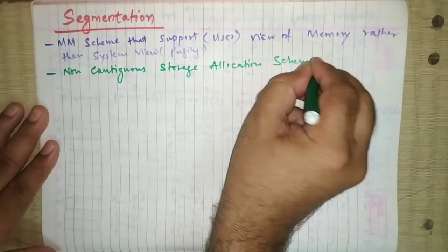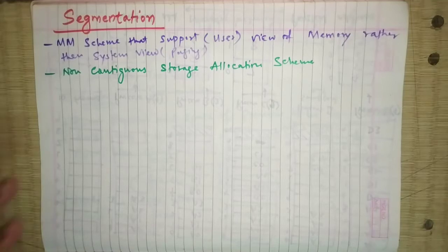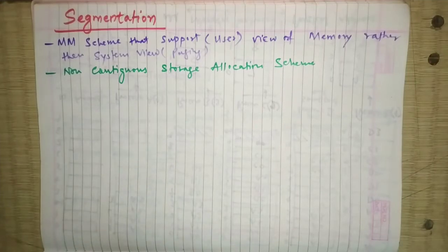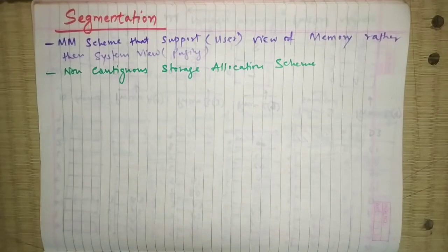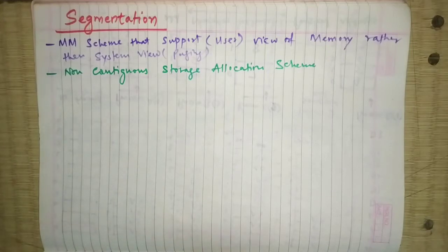The user program can be divided using segmentation. In paging, the process was divided into a number of pages of fixed size, and it was a physical partition. In segmentation, we are going to divide the program into a number of segments.